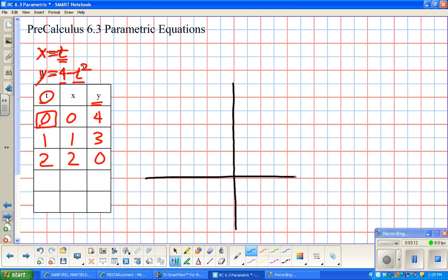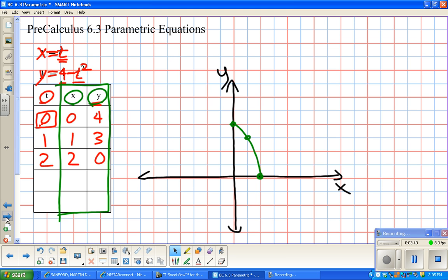If we were going to look at a graph for this, let's put a little set of axes here. The axes are the same axes we've always worked with, x and y. Worth noting then that there are a bunch of t values here, but I don't actually graph the t values. I really only graph the x and the y. So 0,4, 1,3, 2,0.